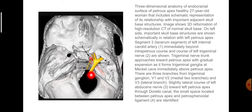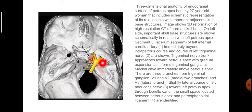The trigeminal nerve trunk approaches the petrous apex with gradual expansion as it forms the trigeminal ganglion in Meckel's cave immediately above the petrous apex, with three branches: V1, V2 (medial branches) and V3 (lateral branch). The left abducent nerve courses toward the left petrous apex through Dorello's canal. The small space located between the petrous apex and the petrosphenoid ligament is identified.